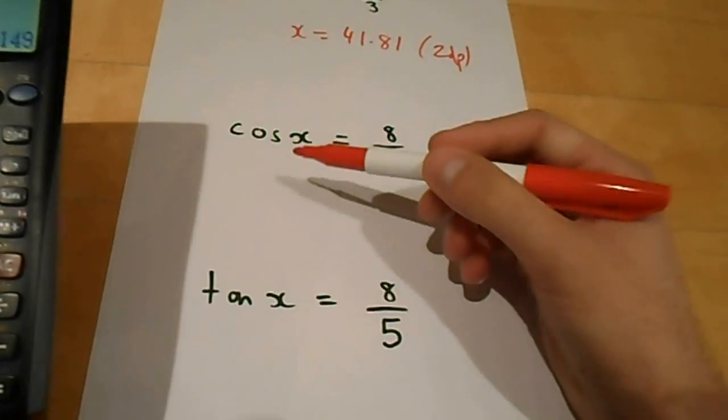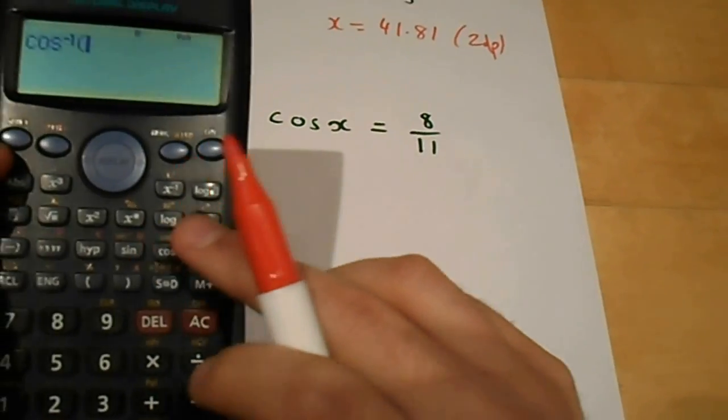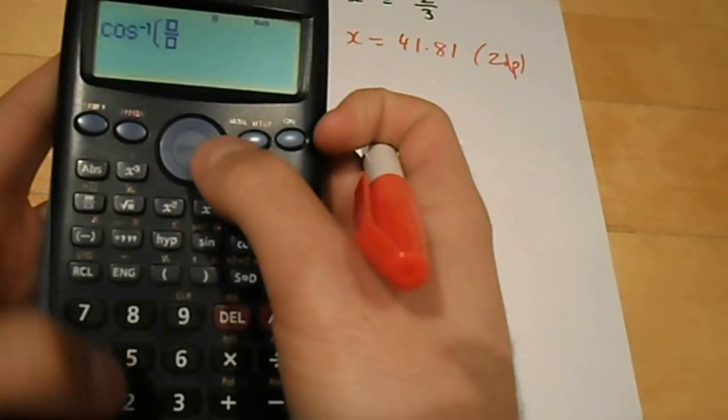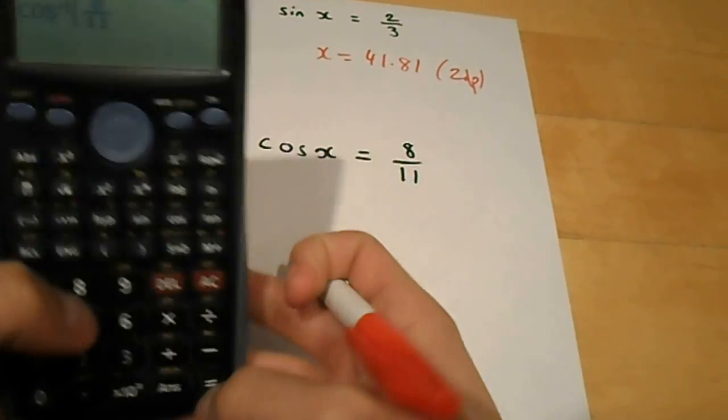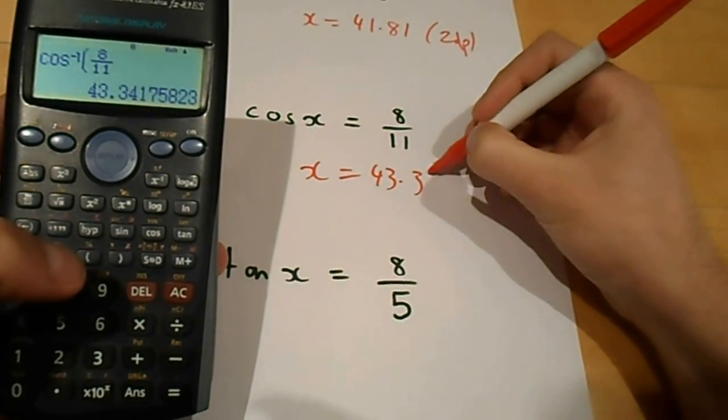And exactly the same with all of the other trigonometric functions. Any time I want to find the inverse, I just press shift cos. Again, fraction, 8 over 11 equals, so x equals 43.34.